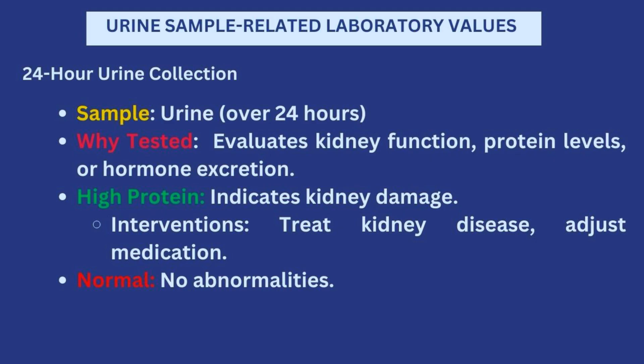In some situations you could also have a 24-hour urine collection, where all urine produced by a person is collected for a total of 24 hours — for example starting at 12 AM and ending at 11:59 PM. This is done to evaluate kidney function, protein levels, or hormone excretion by the kidneys. If there is high protein, that means there is kidney damage and you want to treat the kidney disease and adjust any medications. If normal, there are no abnormalities and the patient is fine.